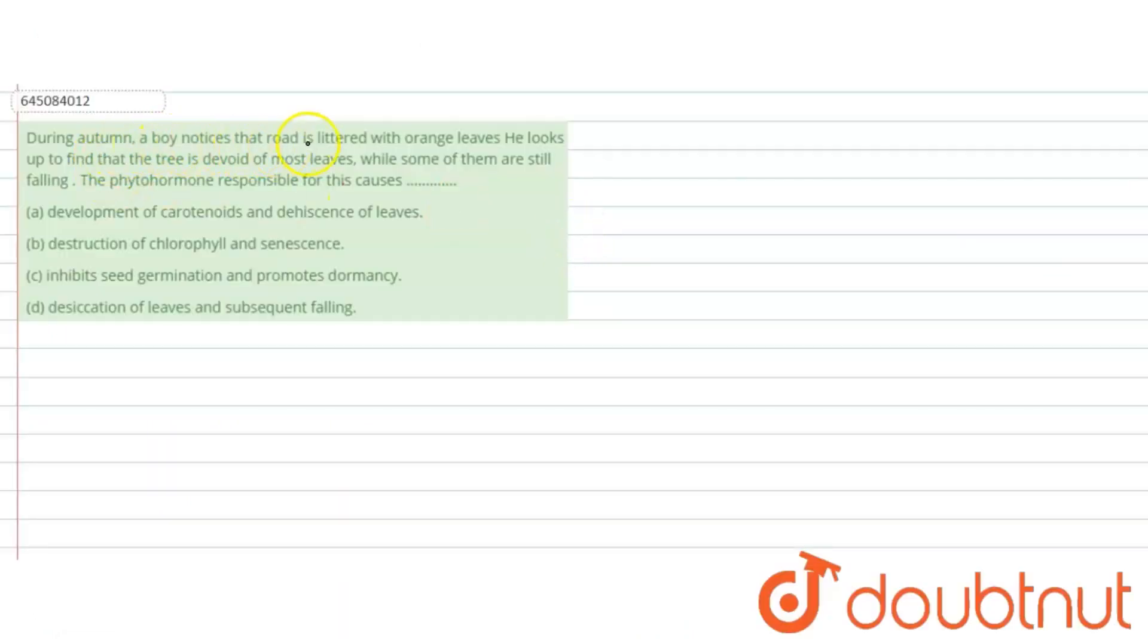The question says: During autumn, a boy notices that the road is glittered with orange leaves. He looks up to find that the tree is devoid of most of the leaves, while some of them are still falling. The phytohormone responsible for this is which? We have to determine the correct answer.